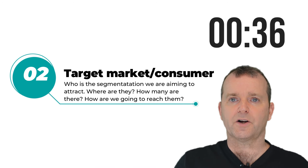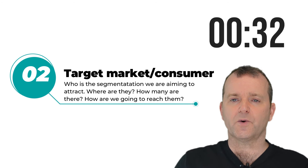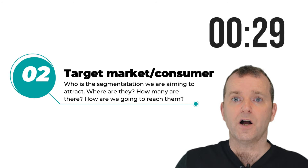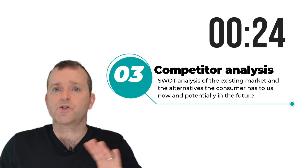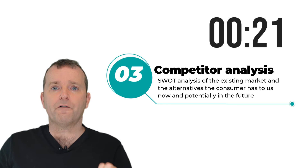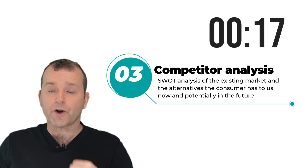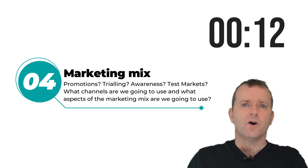Number two: let's talk about who is going to be the target consumer — segmentation, personas — trying to identify clearly where these people are and how we're going to reach them. Number three: competitive analysis — a SWOT analysis of who else is out there offering an alternative to us, what their strengths and weaknesses are, and what we're going to do to make ourselves different from them.